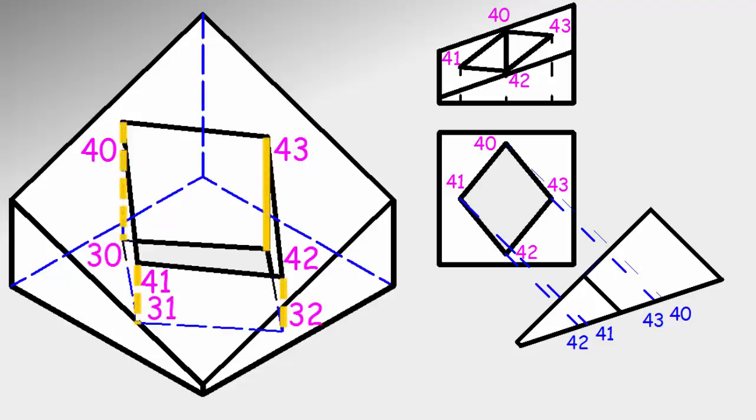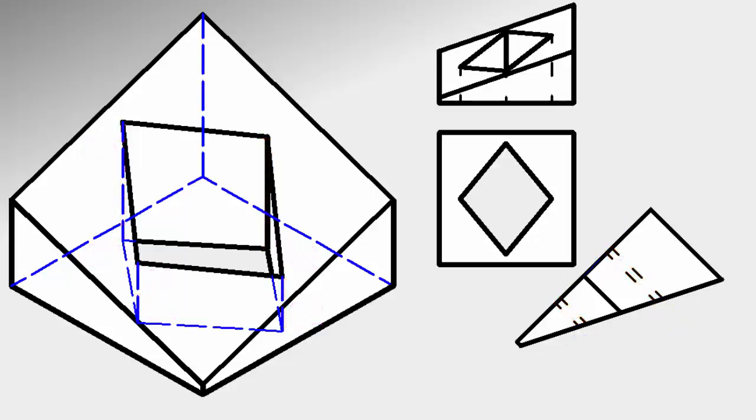We connect the ends of the hole in the same order: 30 with 40, 31 with 41, 32 with 42, and 33 with 43. As we're drawing a hole, we use broken lines. We finish the first auxiliary view.